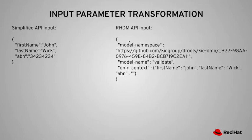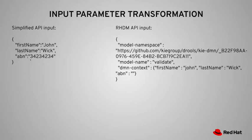You can see that the input for Decision Manager is more complex than that. In addition to first name, last name, and ABN, it also provides the API with certain additional information like model namespace, etc. Some of this information is not really relevant to the user because it's more to do with the implementation. If you want to use it directly, you may be leaking some of the implementation details of your API.